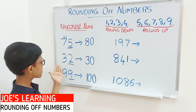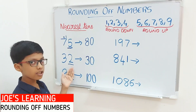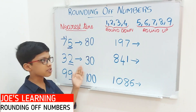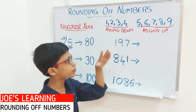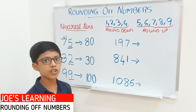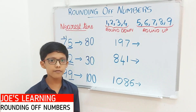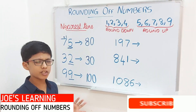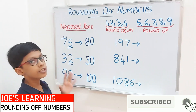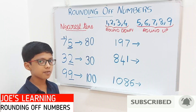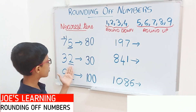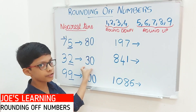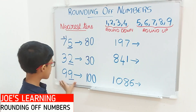Now the next example is 32. So we have to look at the digit in the 1's place — 2 is in the 1's place. It is shown that we need to round downwards, because it is a number lesser than 5. So we just put a 0 in the 1's place, giving us 30.